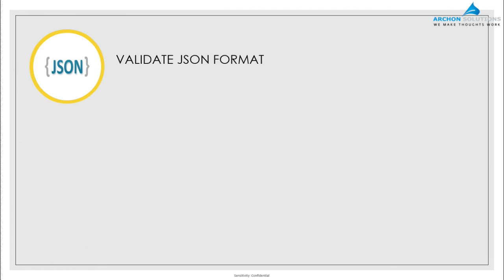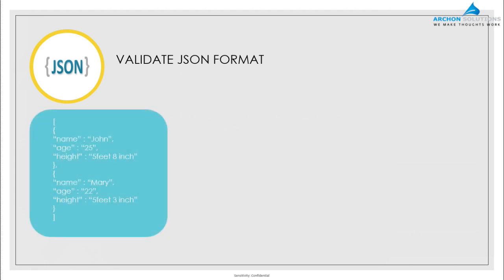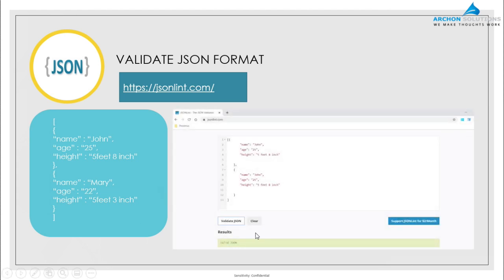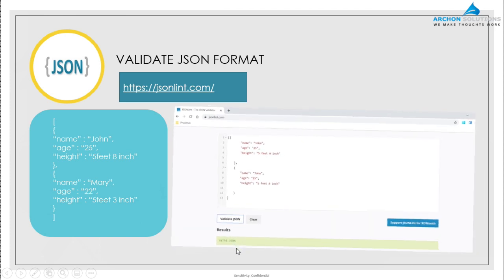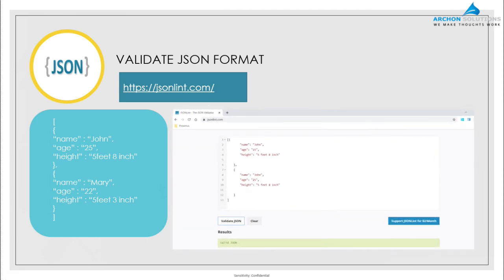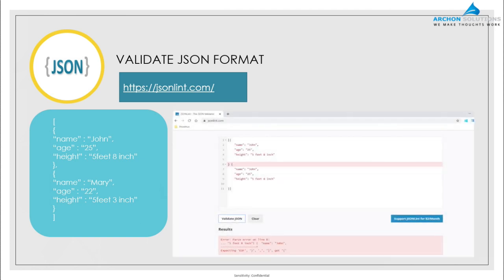There are easy ways to validate whether your JSON format is correct. JSON itself has provided us with a website called jsonlint.com. If you go to this website, paste your JSON structure, and press validate JSON, it will show you whether it is valid or not.